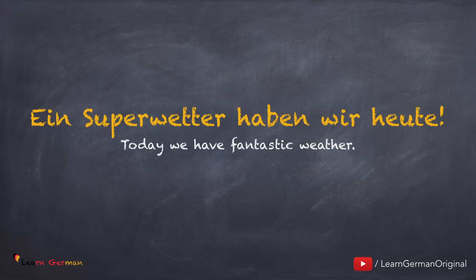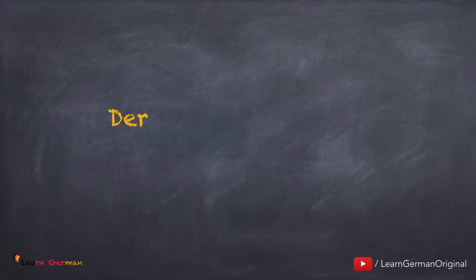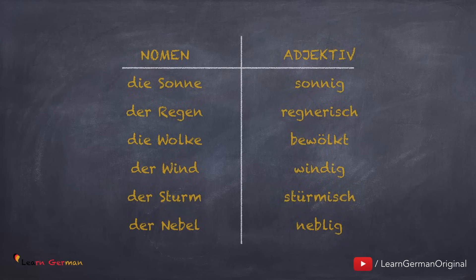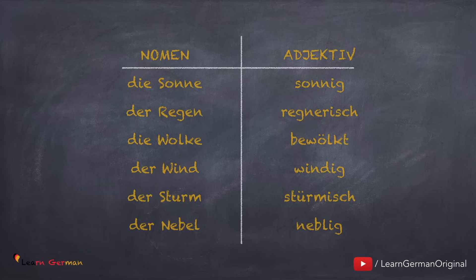Ein super Wetter haben wir heute — you would use this when the weather is really beautiful. Der Himmel ist klar — this you would use when you don't see any clouds in the sky. Some of the words we just covered can be classified as nouns and adjectives. Let's look at them once again: Die Sonne — sonnig. Der Regen — regnerisch. Die Wolke — bewölkt. Der Wind — windig. Der Sturm — stürmisch. Der Nebel — neblig.